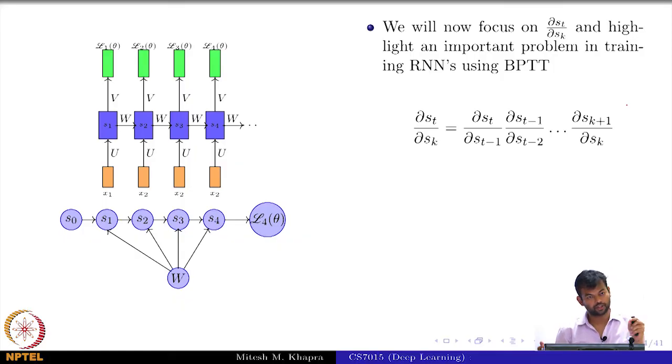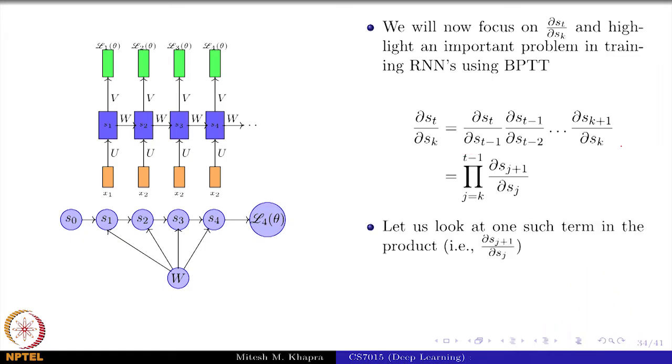Remember I had done this short circuiting. So, I am now just going to expand it again. This is going to be t by t minus 1, t minus 1 by t minus 2 and so on up to k plus 1 by s_k. And I can write it as this generic formula. I have just replaced this as a product and written it more compactly.